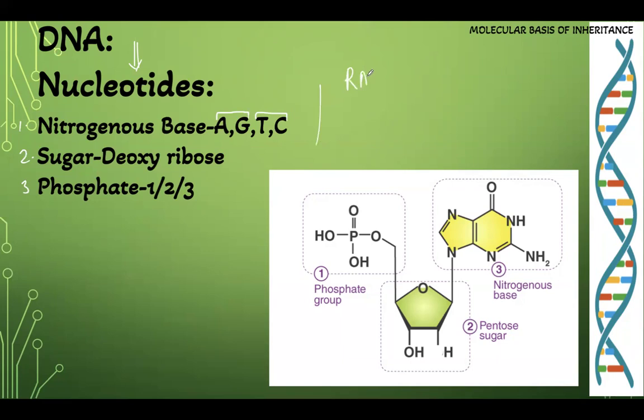RNA is also a nucleic acid which has nitrogenous base A, G and C but instead of thymine they have uracil. Coming to the next point, the second component of the nucleotide is deoxyribose sugar but in case of RNA this is ribose sugar.